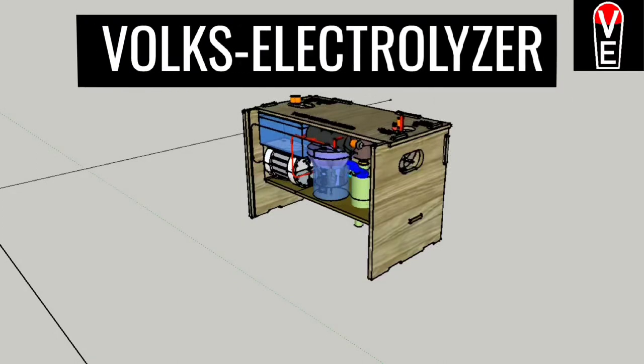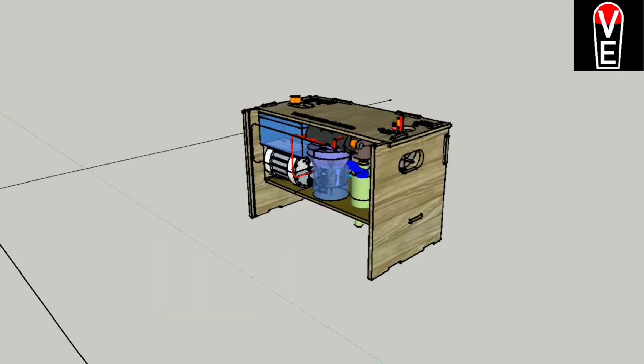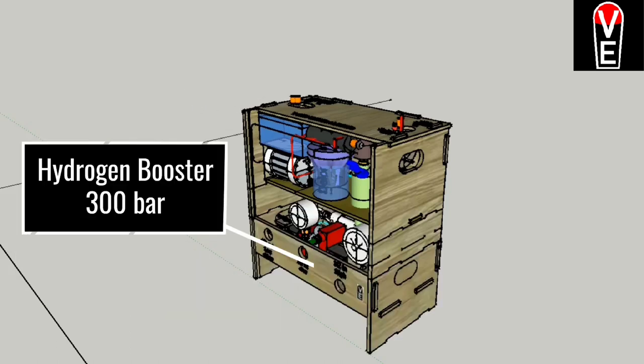The Volks Electrolyzer can store energy from renewables in the form of hydrogen. Module 1, the Volks Electrolyzer space, compresses hydrogen up to 30 bar.